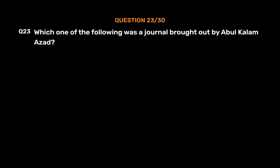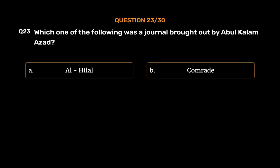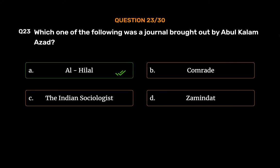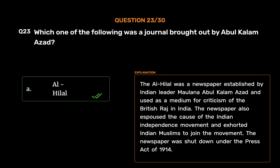Question No. 23. Which one of the following was a journal brought out by Abul Kalam Azad? Option A, Al-Hilal; Option B, Comrade; Option C, The Indian Sociologist; Option D, Zameen Dat. The correct answer is Option A, Al-Hilal. Al-Hilal was a newspaper established by Indian leader Maulana Abul Kalam Azad and used as a medium for criticism of the British Raj in India. The newspaper also espoused the cause of the Indian independence movement and exhorted Indian Muslims to join the movement. The newspaper was shut down under the Press Act of 1914.